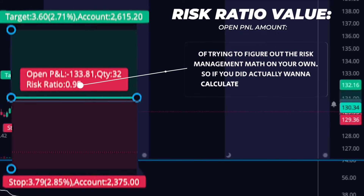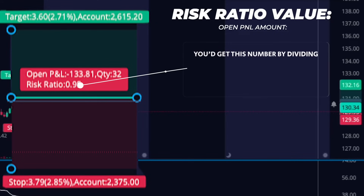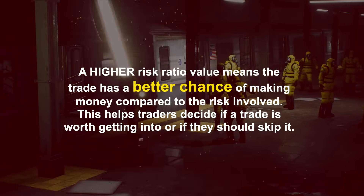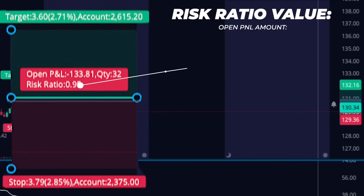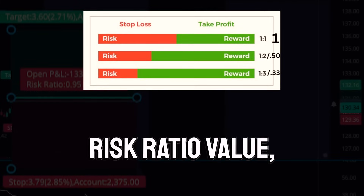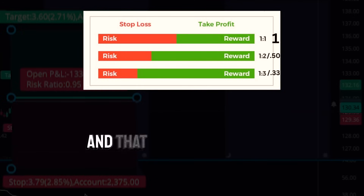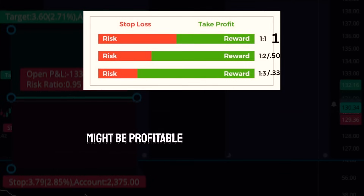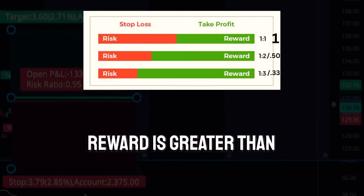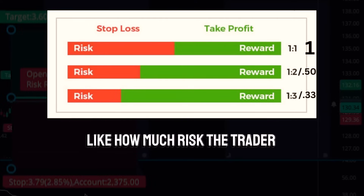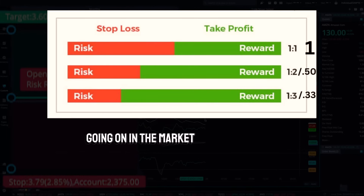If you did actually want to calculate the risk ratio, you get this number by dividing the potential profit by the potential loss. A higher risk ratio value means that the trade has a better chance of making money compared to the risk involved — so that's good. This is going to help you decide if it's worth being in this trade or not. As a rule of thumb, a risk ratio value of less than one means that the trade might be profitable since the possible reward is greater than the possible risk. But it's important to think about other things too, like how much risk the trader is okay with or what's going on in the market right now.